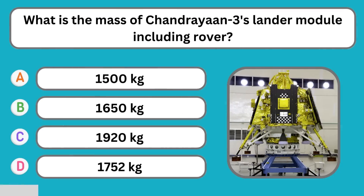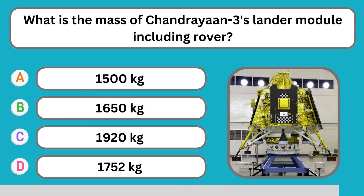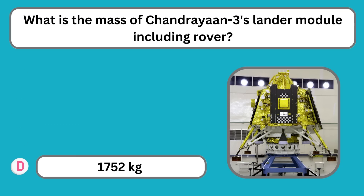What is the mass of Chandrayaan-3's lander module including rover? 1,752 kg.